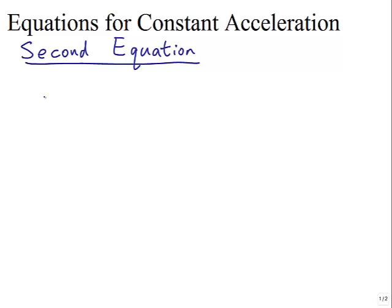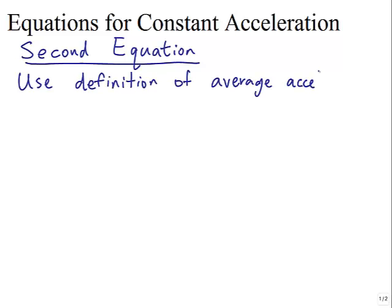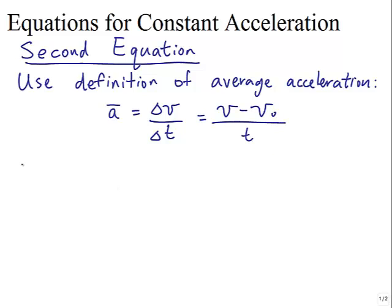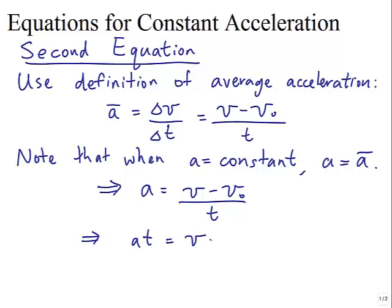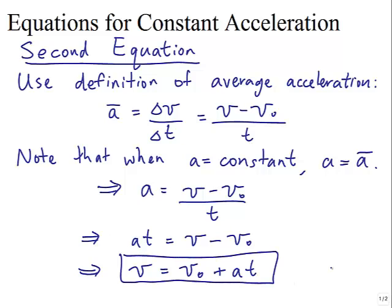Let's derive the second equation for constant acceleration. We use the definition of average acceleration: a-bar equals delta-v over delta-t, which is (v minus v-sub-0) over t. When acceleration is constant, a equals the average acceleration, so a equals (v minus v-sub-0) over t. Multiplying both sides by t gives at equals v minus v-sub-0, and rearranging gives v equals v-sub-0 plus at — that's the second equation.